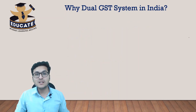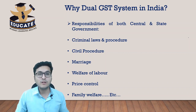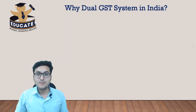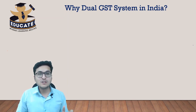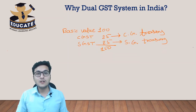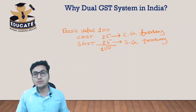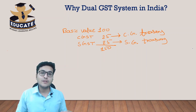There are certain responsibilities wherein both central and state governments work simultaneously, such as criminal laws and procedures, civil procedures, marriage, price control, family welfare, etc. In order to fulfill their respective responsibilities, both central and state governments need resources in the form of money. Hence, the central government charges CGST and the state government charges SGST in case of intrastate transactions.